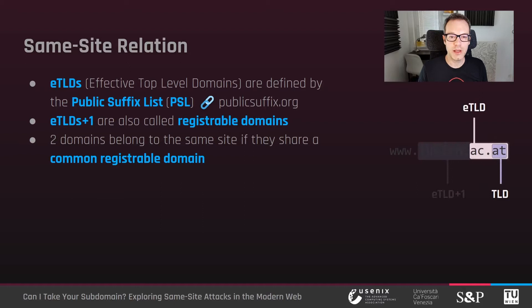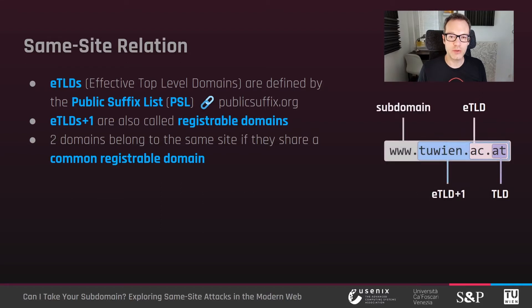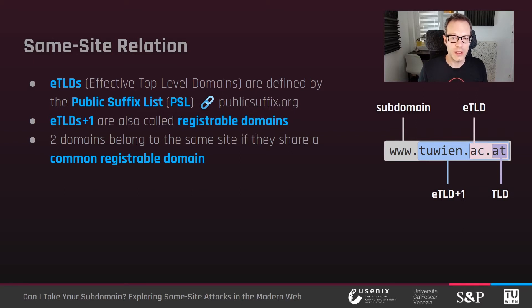Before proceeding, I will define more precisely what we mean by 'same site' in the context of this work. Consider the fully qualified domain name of my university, www.tuvin.ac.at. 'ac.at' is called the effective top-level domain, and denotes academic institutions in Austria. Being a reserved suffix, it is part of the public suffix list, a list maintained by Mozilla and imported by browsers for a number of reasons, including determining the scope of cookies.